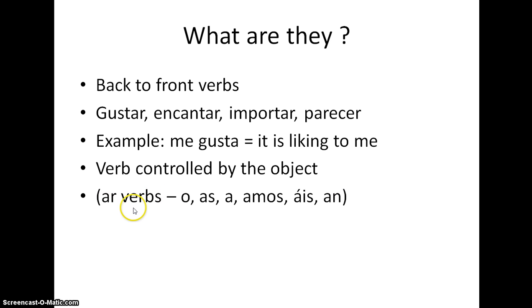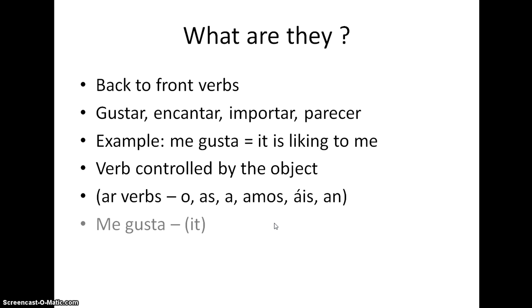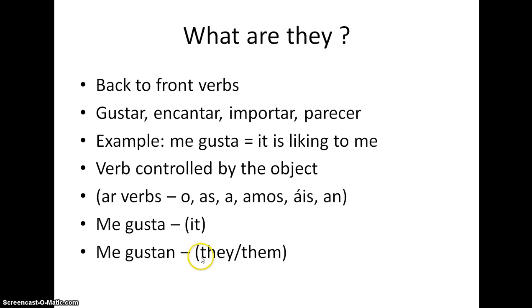If we look at AR verbs, the endings for the he/she/it form end in A. The reason why we put an N on the end — which we teach in year seven or year eight — is because when the thing you like is plural, it literally means 'they are liking to me.' And the 'they' ending in the present tense is AN.